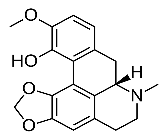Bulbocapnine is an alkaloid found in Corydalis, Papaveraceae, and Dicentra, plants in the family Fumariaceae that can cause fatal poisoning in sheep and cattle. It has been shown to act as an acetylcholinesterase inhibitor, and inhibits biosynthesis of dopamine via inhibition of the enzyme tyrosine hydroxylase.